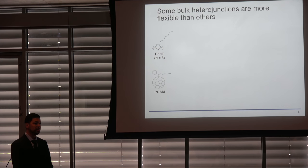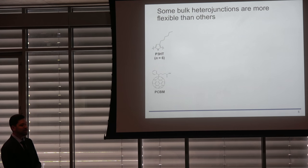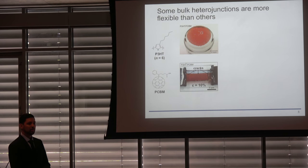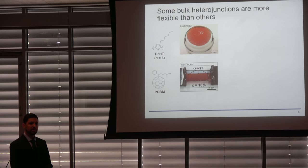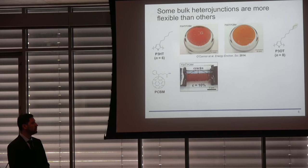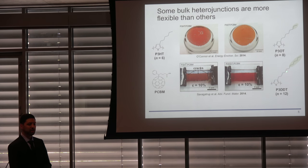Our prior research showed that bulk heterojunction solar cells are not equally flexible. For example, when P3HT:PCBM is laminated onto a glass hemisphere, cracking appears around the curved edges. When stretched to 10% strain—roughly the strain from slightly bending a knuckle—perpendicular cracks appear. However, increasing the side chain length to create P3OT, or further to N=12, allows these materials to survive lamination and stretching beyond 10%, making them better candidates for flexible and stretchable solar cells.